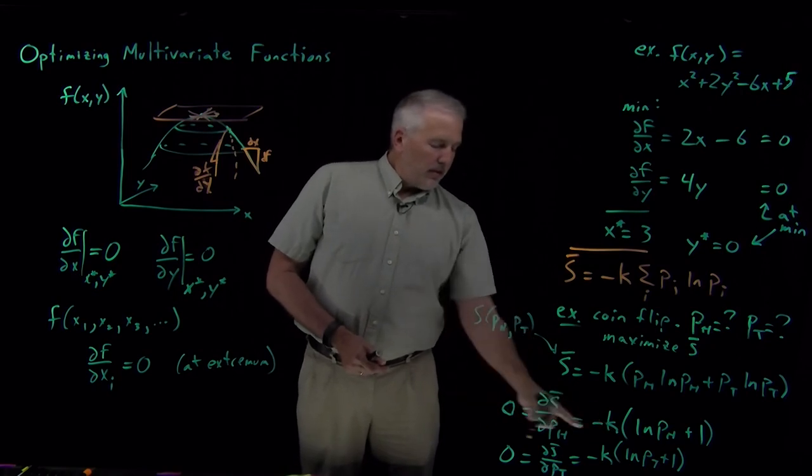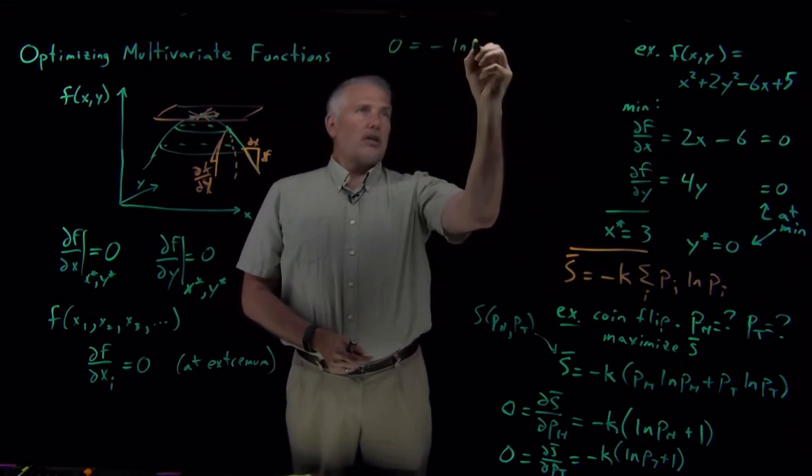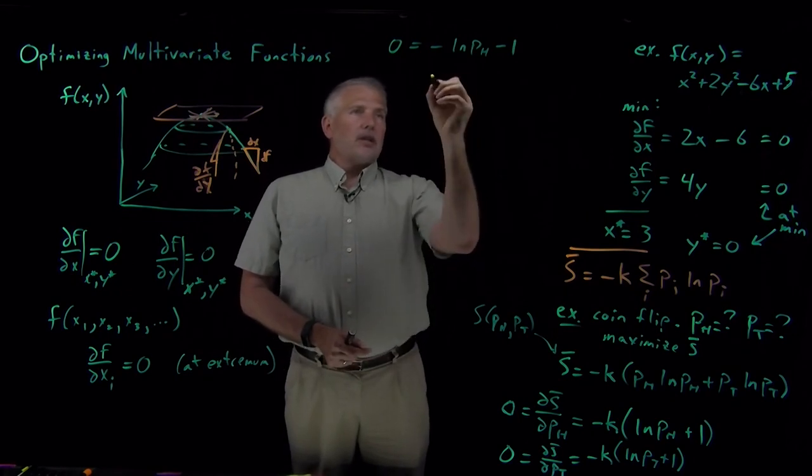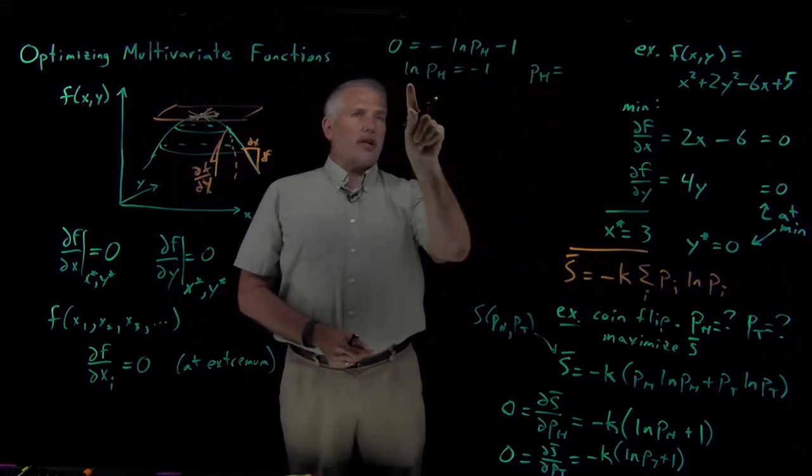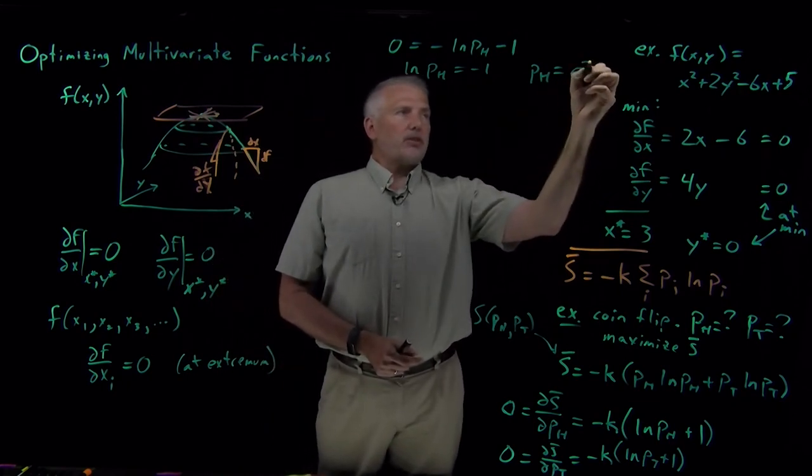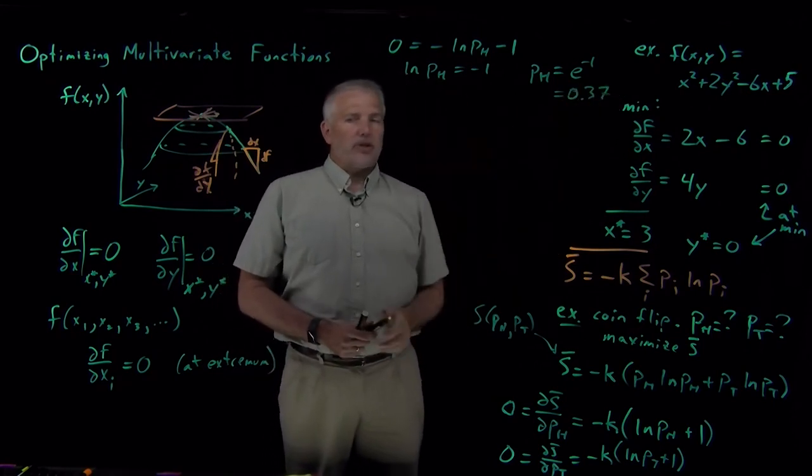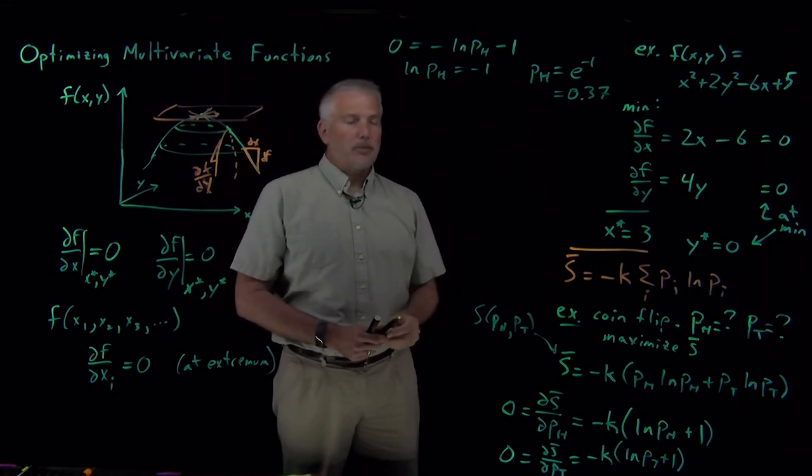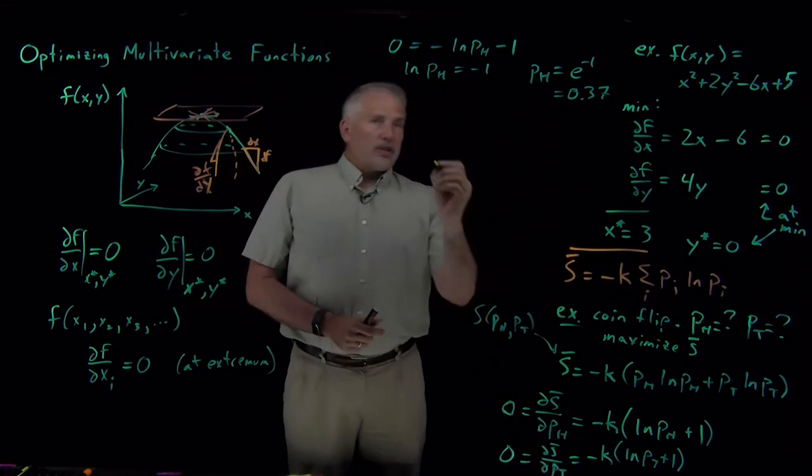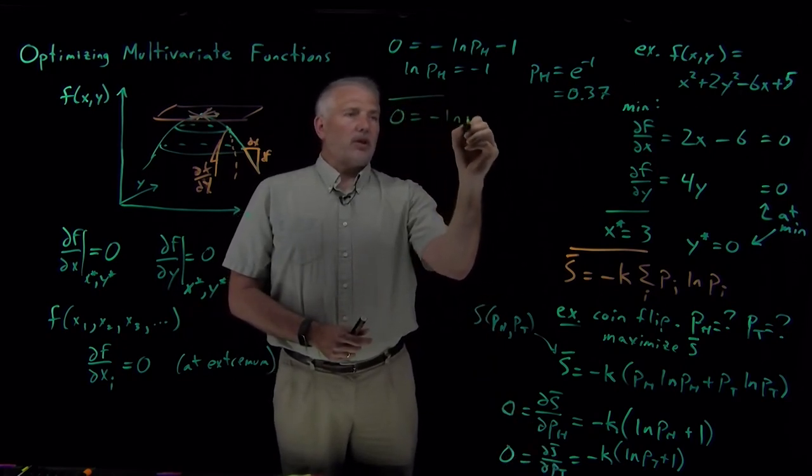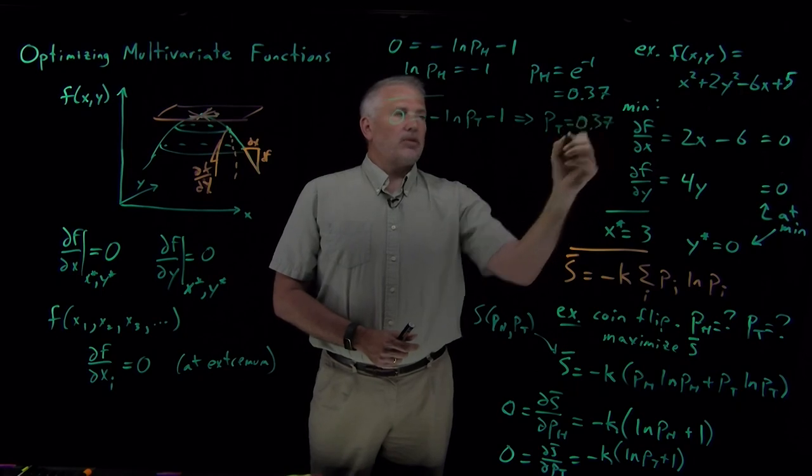Rearranging the first one, first of all I can divide by k and get rid of the k on both sides. The equation is -log p_h - 1 has to be equal to 0. So log p_h has to be -1, or p_h has to be equal to, after I undo the natural log by taking the exponential, I'll get e^(-1) or 0.37. Again, mathematically the same as the example we considered when we did optimization of a one variable function. So I find out that p_heads is 0.37. Math is exactly the same for the second equation. So setting 0 equal to -log p_tails - 1 also leads to p_tails equal to the same result, 1 over e or 0.37.